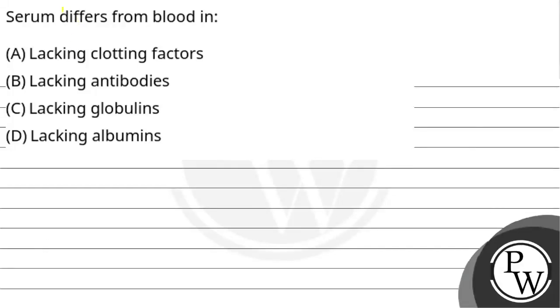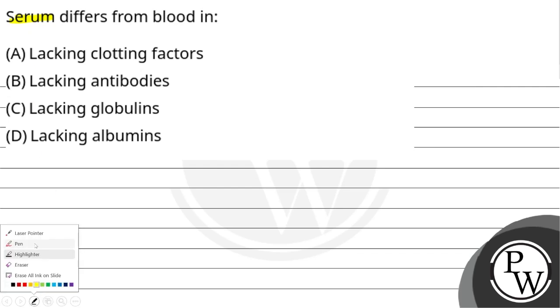Hello, let's see the question. Serum differs from blood in: option A lacking clotting factor, option B lacking antibodies, option C lacking globulin, and option D lacking albumin.